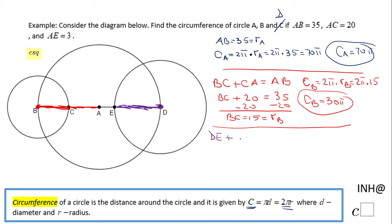If you take a look, this whole segment AD is nothing else than the radius of circle A.